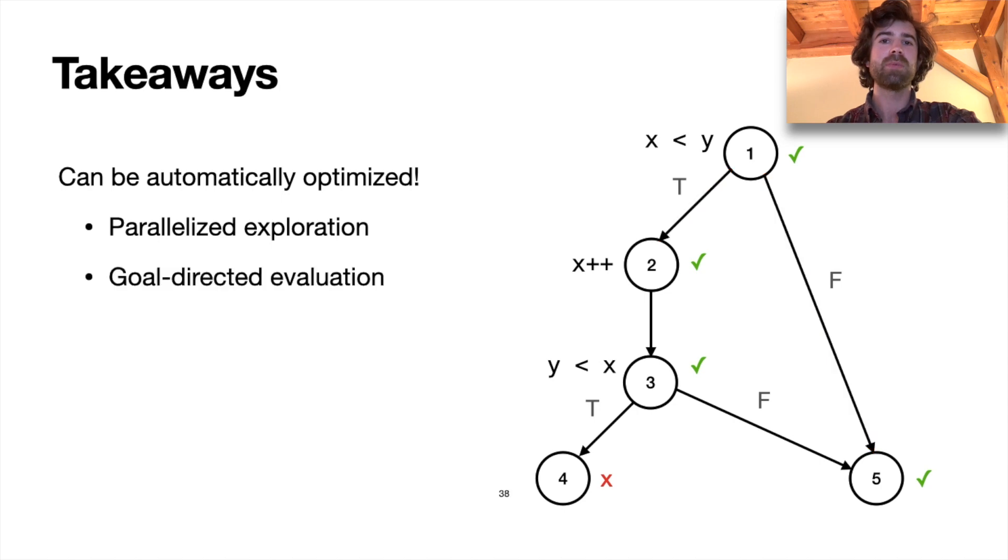And the second optimization we get is goal-directed evaluation. So say that we really only care whether node 4 is reachable. We could just add this query here, and this would direct the Formulog runtime to rewrite our analysis so that it explores only nodes that, given the control flow graph, could be on a path leading to node 4, which in this case means we omit exploring node 5. And it's really neat that the Formulog runtime can do these sorts of powerful high-level optimizations automatically for us.